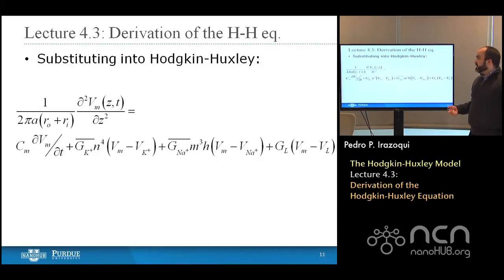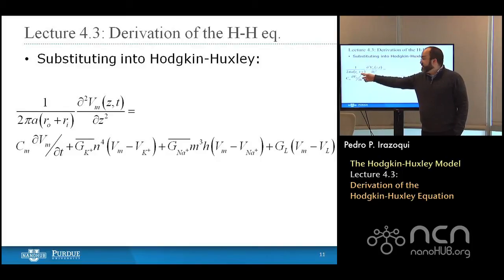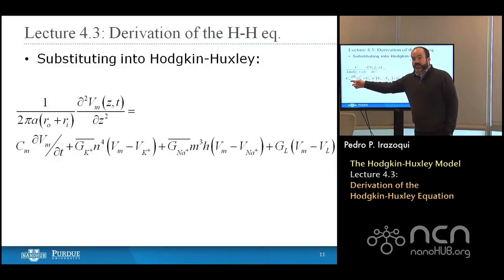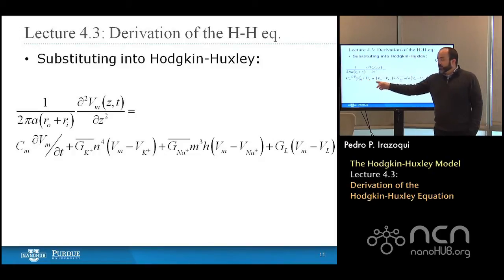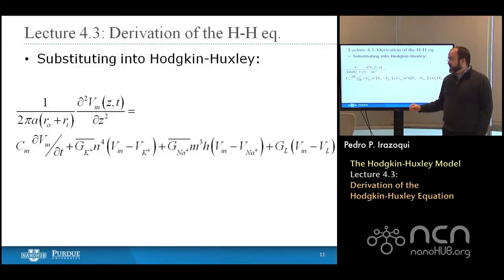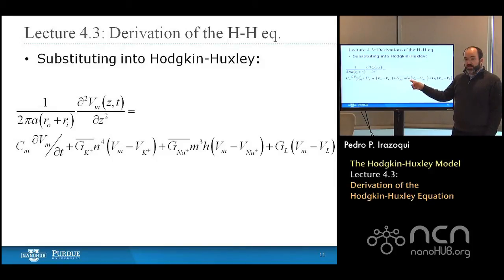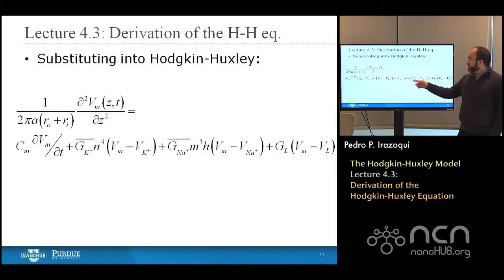Substituting that back into the Hodgkin-Huxley equation, we have: 1 over (2πA times (R sub o plus R sub i)) times the second derivative of V sub m with respect to distance, equals the membrane capacitance times the first partial derivative of V sub m with respect to time, plus G sub K bar times N to the fourth times the driving force (V sub m minus V sub K), plus G sub Na bar times M cubed H times the driving force (V sub m minus V sub Na), where both M and H are of that same form as N, plus G sub L times (V sub m minus V sub L).